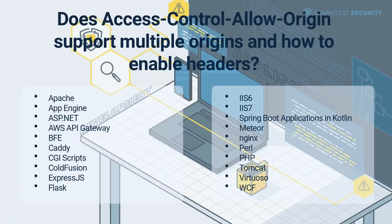Does Access-Control-Allow-Origin support multiple origins? While the header does support multiple origins, browsers usually do not. A whitelist of permitted domains must be created to offer support to multiple origins. However, this must be done carefully, as blanket access permission to a domain and all of its subdomains may easily open the door to unwanted visitors and requests.